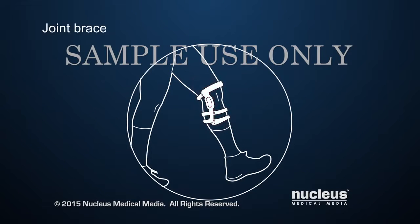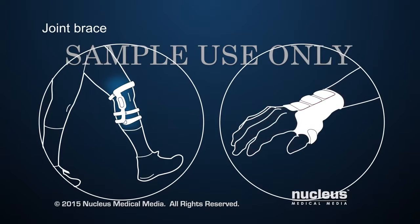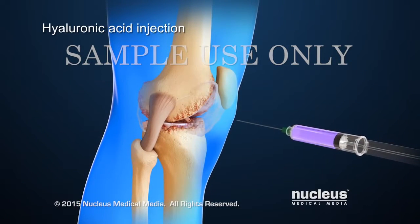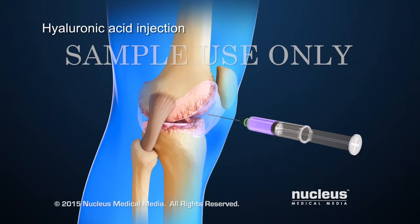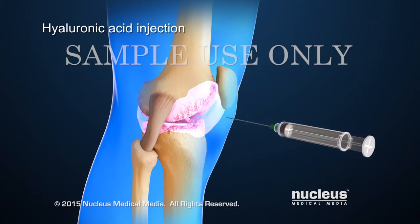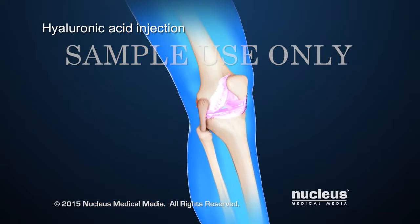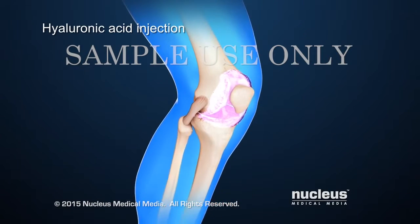Braces can help with joint support and alignment to reduce joint pain. Another treatment option is the injection of hyaluronic acid into the joint. Hyaluronic acid is a naturally occurring substance in the joint's synovial fluid, which helps lubricate the joint and allows the bones to slide over each other more easily.